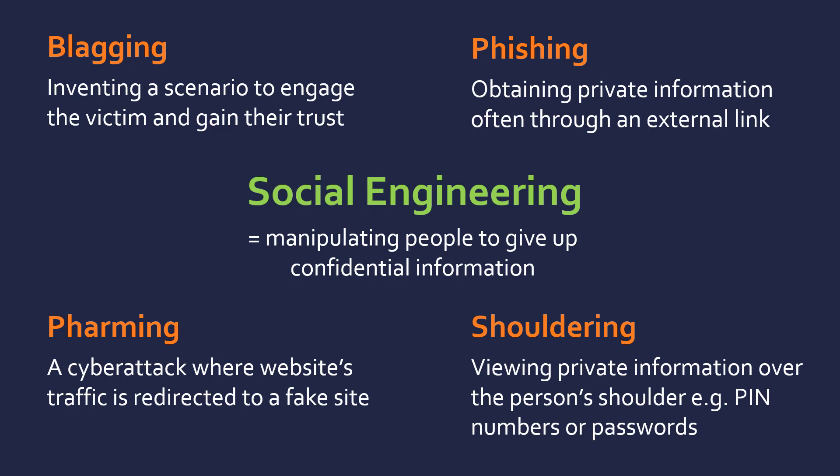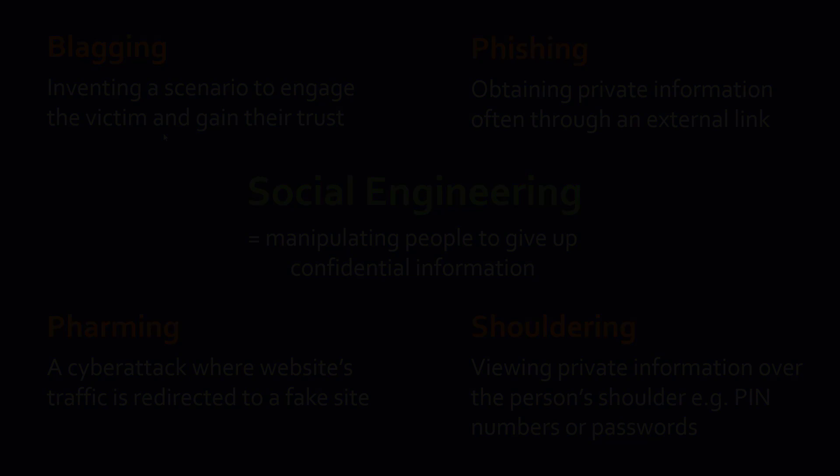Finally, we have shouldering, which is viewing private information over a person's shoulder or just viewing it in general. The point is you're literally seeing someone's PIN number, password, or some other information. This is much more real-life than the other methods, which are all online.